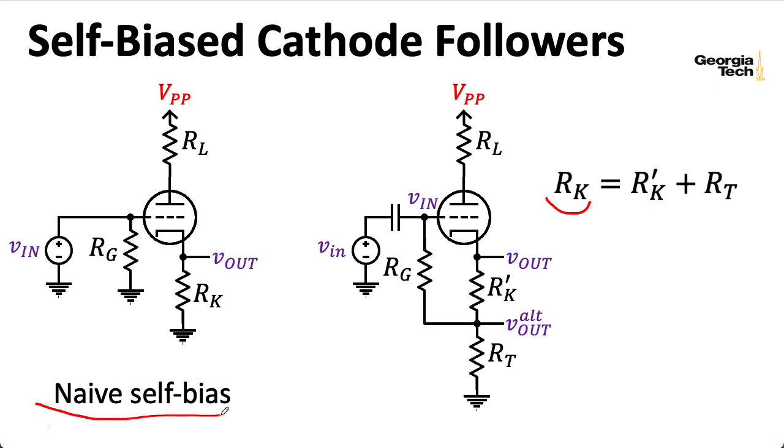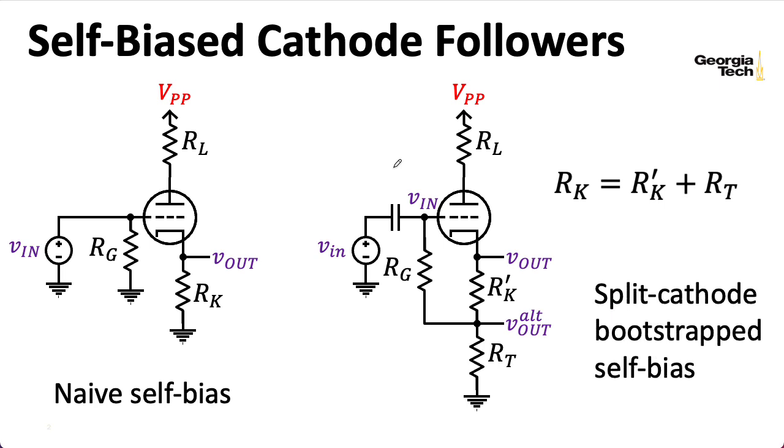Nobody actually uses this self-bias scheme. So this thing on the right here is just called a self-bias cathode follower, but if I had to give it a name, you might call it something like a split cathode bootstrap self-bias, something like that. I don't know. Somebody out there may have called it that, but I think I just made that up.